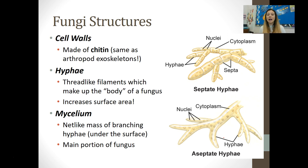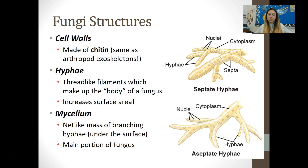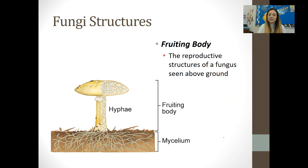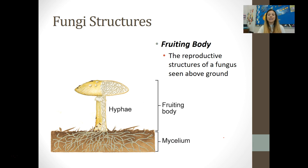Some important fungi structures: their cell wall is made of chitin, which is the same structure found in the exoskeletons of arthropods like insects, crabs, and lobsters. They have filaments called hyphae that make up the body of the fungus — this stringy body gives them much more surface area for obtaining nutrients in a small space. Underground, there's a network of that filament called mycelium, which is the main portion of the fungus. The part that pops up above ground is called the fruiting body, which is used only for reproduction. So when you eat mushrooms on pizza, you're actually eating the reproductive organs of a fungus.